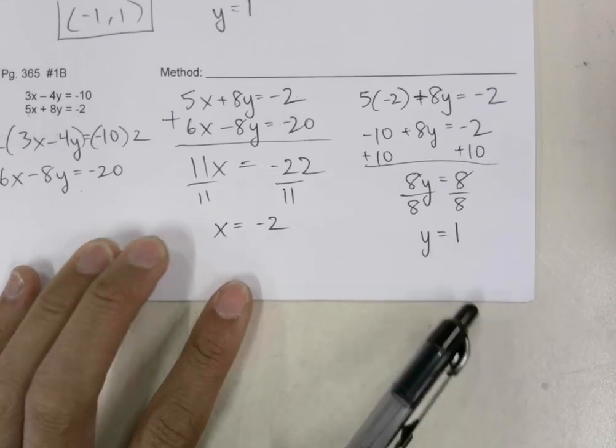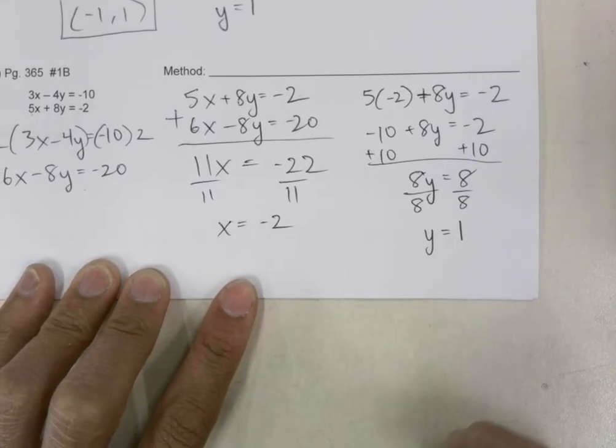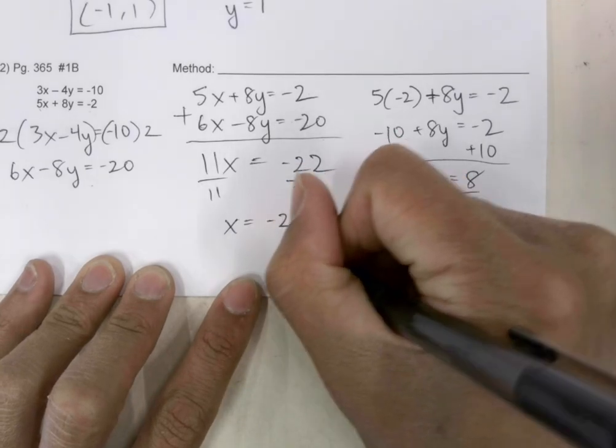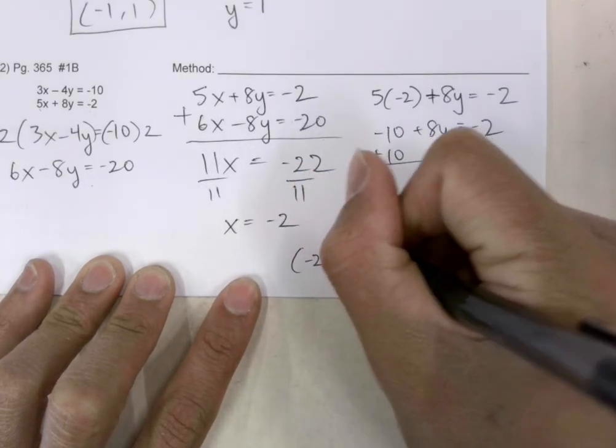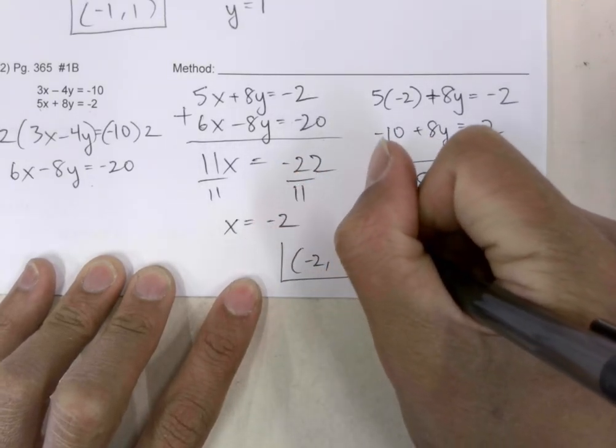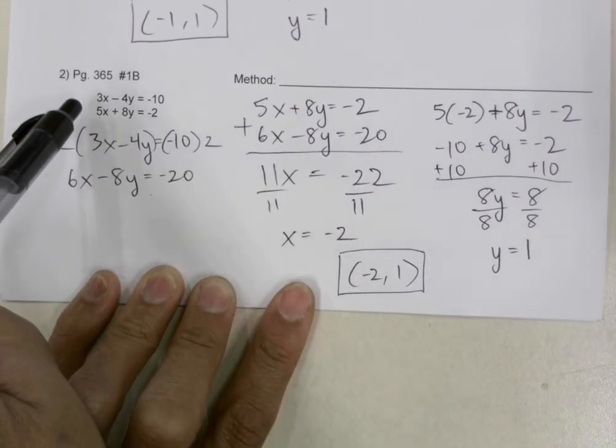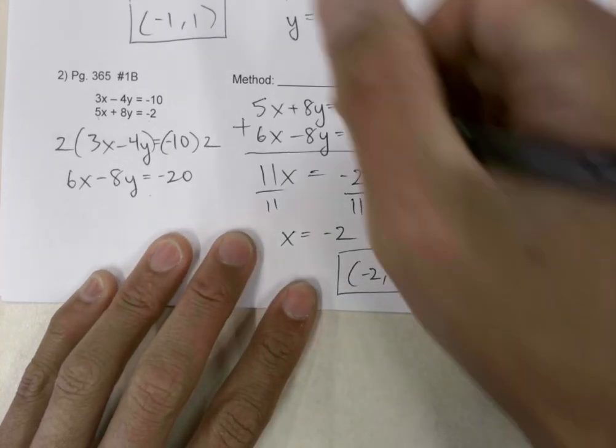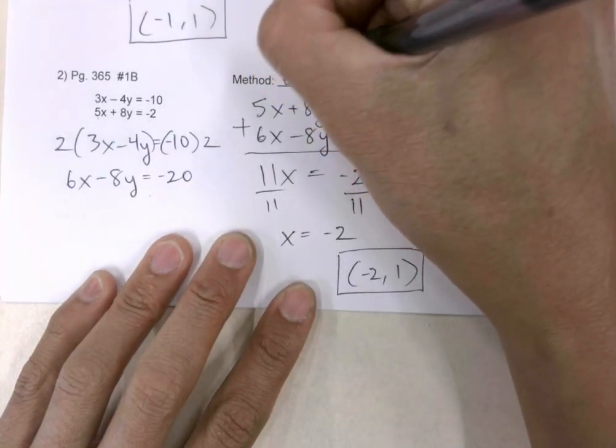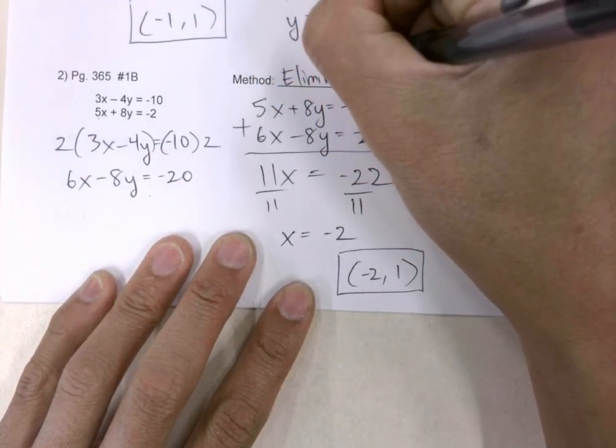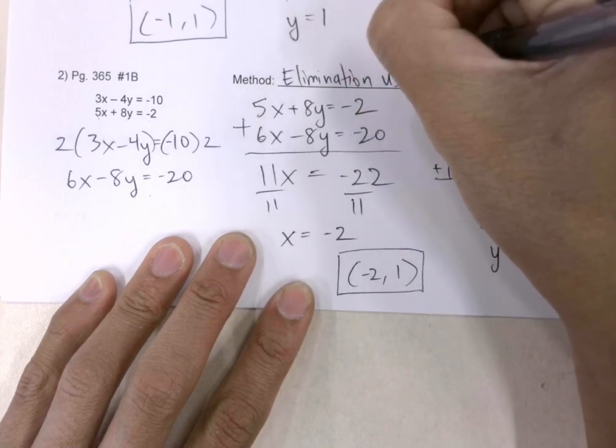Now that I have found my x and my y, I'm going to write my answer as an ordered pair (x, y) and put a box around it. That's my solution. That is where these two lines intersect. Which method did I use? I used elimination using multiplication.